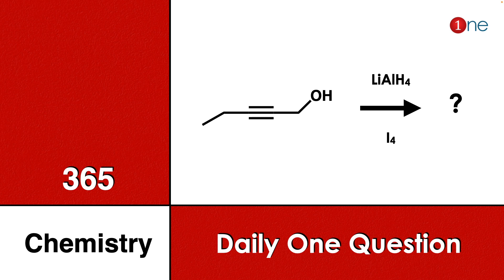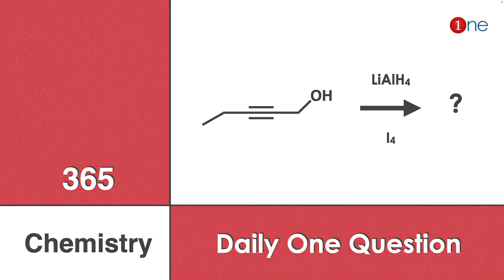Welcome to One Chemistry. This is the 365 Chemistry Series — daily one question for you. Here you have an alkyne and an alcohol with ethyl groups on either side, reacting with lithium aluminum hydride and iodine. You have to guess what will be the final product.